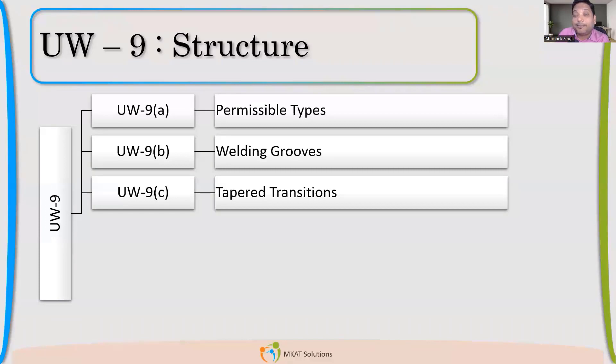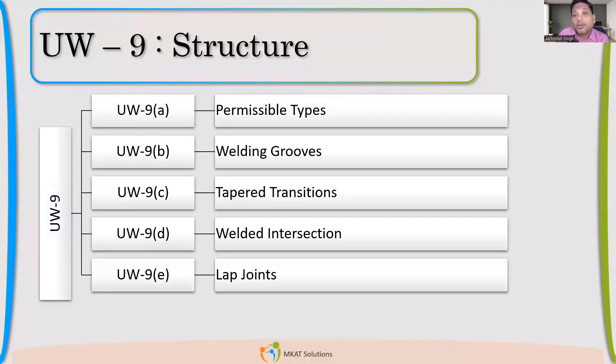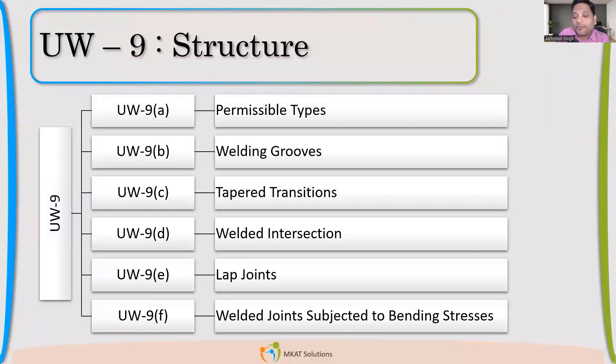9C talks about tapered transition. 9D talks about welded intersections and staggering of welds. 9E talks about lap joints. F talks about the closing plate, flat head welded with a shell, tube sheet welded with a shell, how to make that joint.